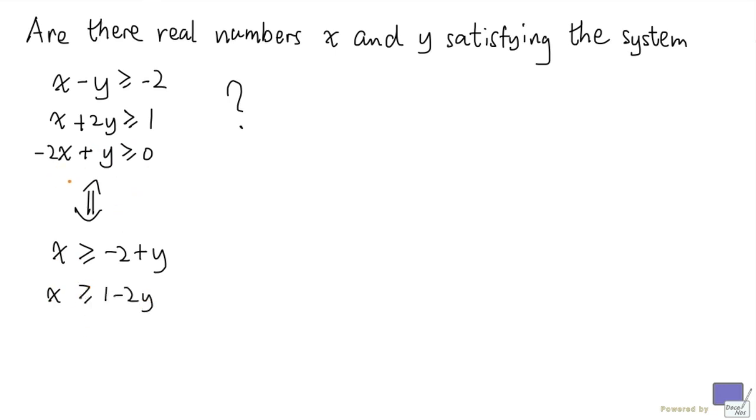And for the third inequality, I'm going to add minus y to both sides, and then multiply both sides by one half. So I get minus x greater than or equal to minus one half y. So as you see, in each of these inequalities, I either have x or minus x.